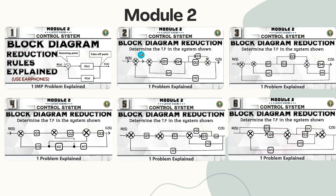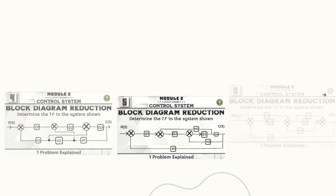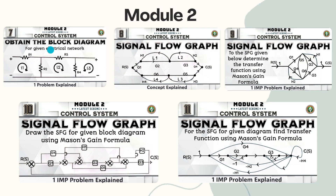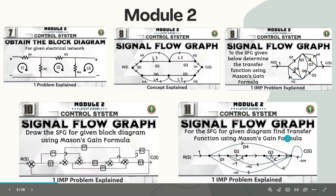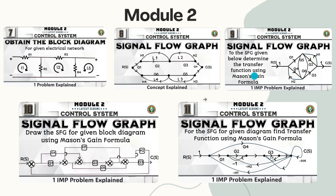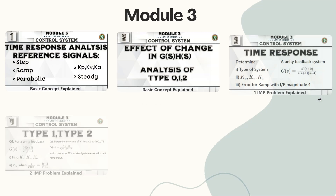Module 2 covers block diagram reduction rules, explained with problems solved in separate videos — including how to obtain the block diagram using an electrical network. After that, signal flow graph under Module 2 is covered: how to draw it, the rules, and a set of problems solved using Mason's gain formula. Go and refer to each of those videos.